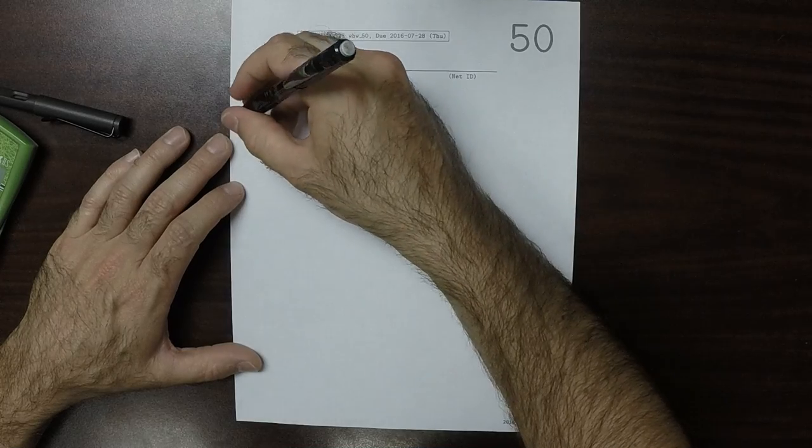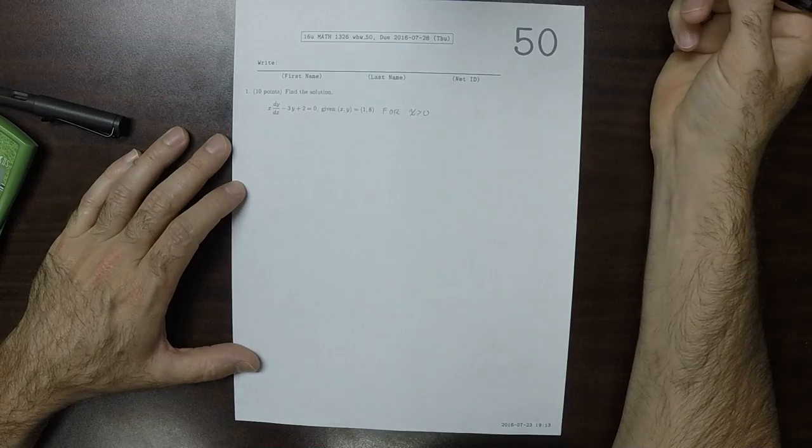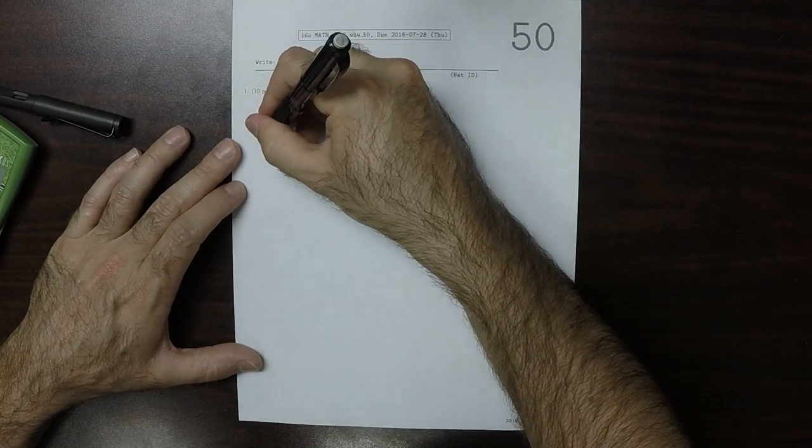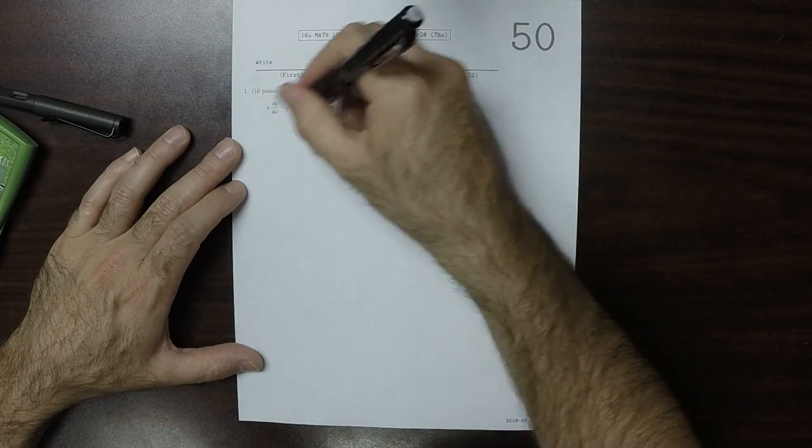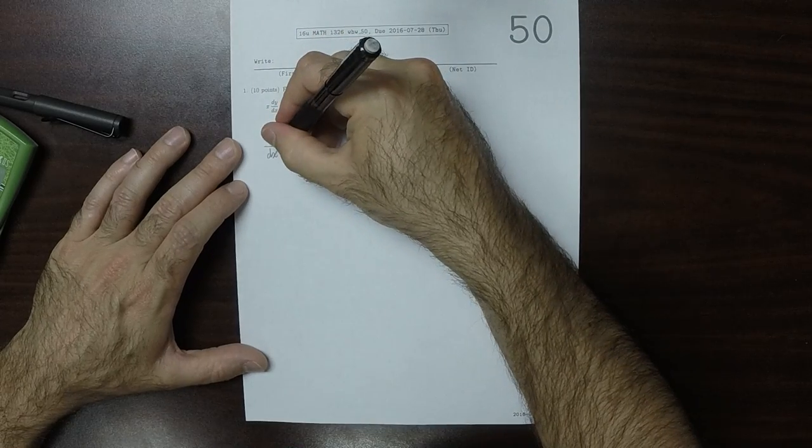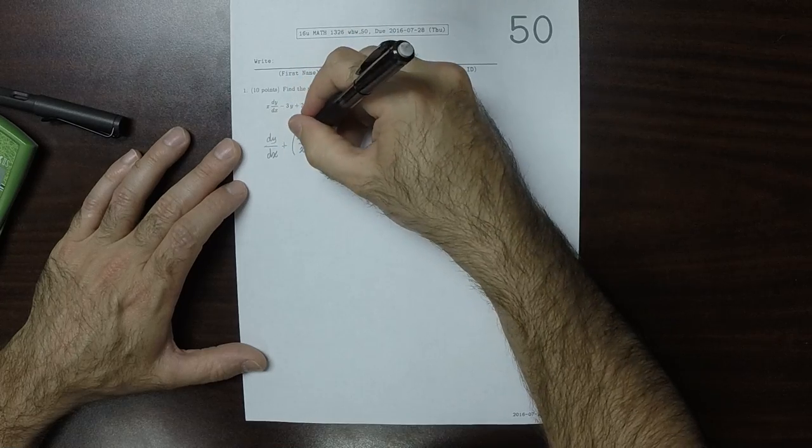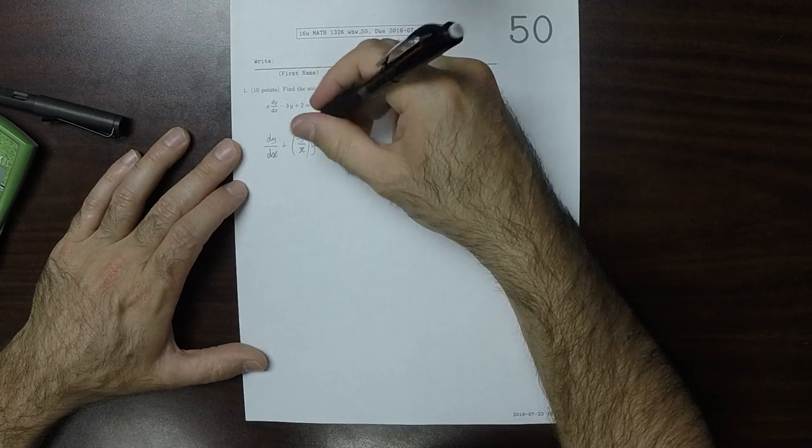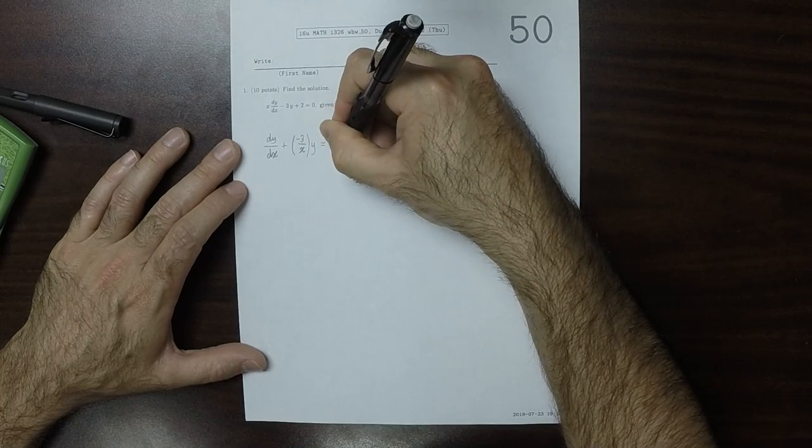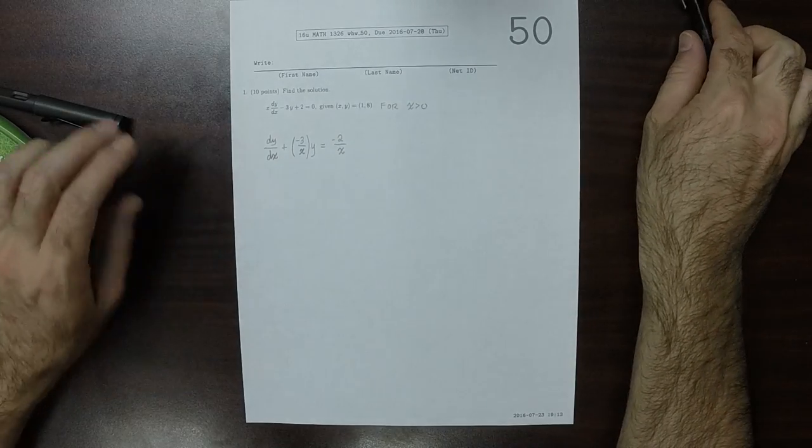This is a first-order linear differential equation, so we'll use an integrating factor. In order to use an integrating factor, we need to put the differential equation in standard form. Dividing it all by x: dy/dx plus negative 3 over x times y equals negative 2 over x. That's moving the 2 over and dividing by x.